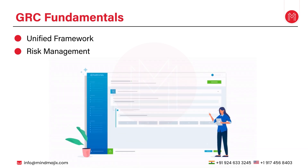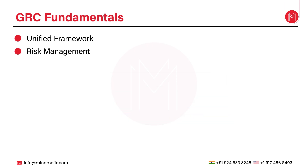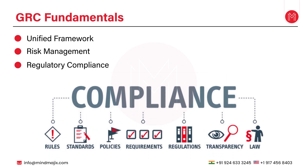A proactive risk management process identifies potential threats and assesses their impact, allowing organizations to prioritize and mitigate them before they become critical issues. The next point is regulatory compliance: adhering to industry regulations such as GDPR, SOX, and HIPAA is crucial to avoid legal repercussions. GRC frameworks ensure companies remain compliant with evolving standards.